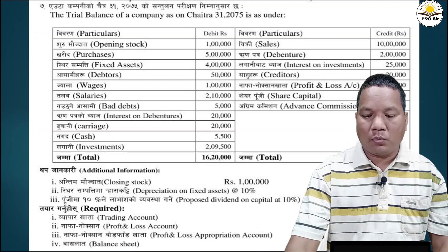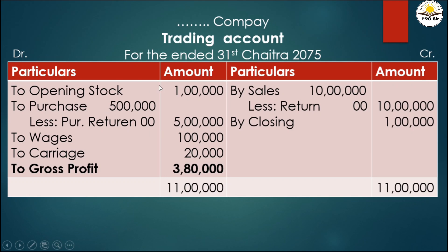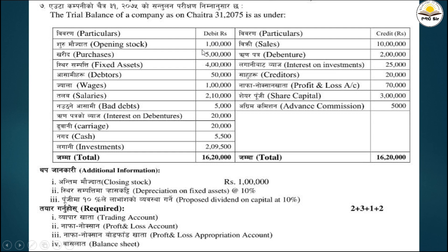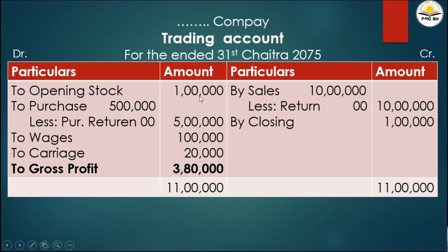Now let's prepare the trading account. The heading will be: Trading Account for the year ended 31st March 2075. On the debit side we start with opening stock from the question - opening stock is 1 lakh rupees, so we write 1 lakh rupees for opening stock.